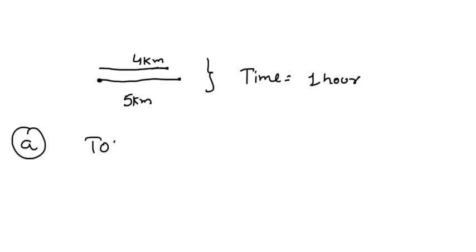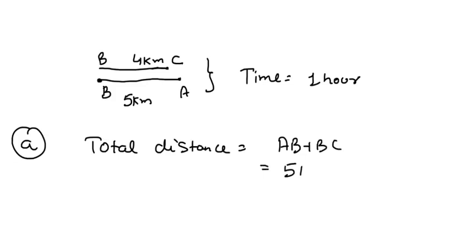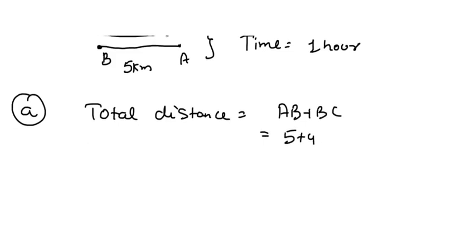In part A we have to calculate total distance. Total distance from A to B he travels 5 km and then from B to point C he travels 4 km. So total distance is AB plus BC, that is 5 plus 4, which equals 9 km. This will be the answer for part A.